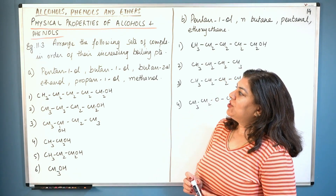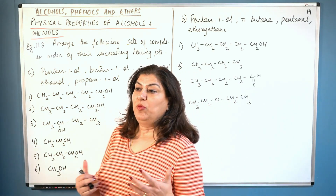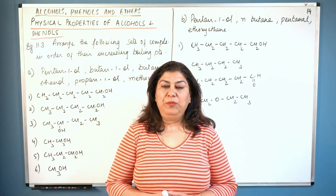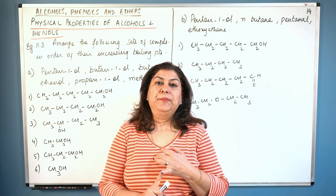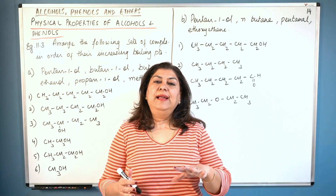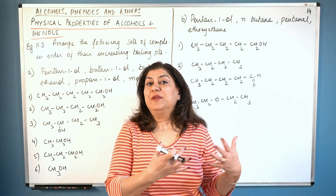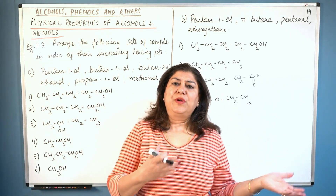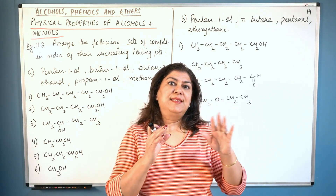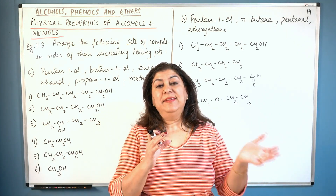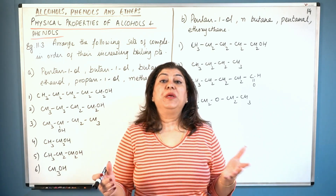Arrange the following sets of compounds in order of their increasing boiling points. What are the factors that affect the boiling point of alcohols and phenols? Alcohols and phenols usually have higher boiling points than corresponding compounds that are similar in their masses, because they form hydrogen bonds which other classes of compounds may not be able to make.